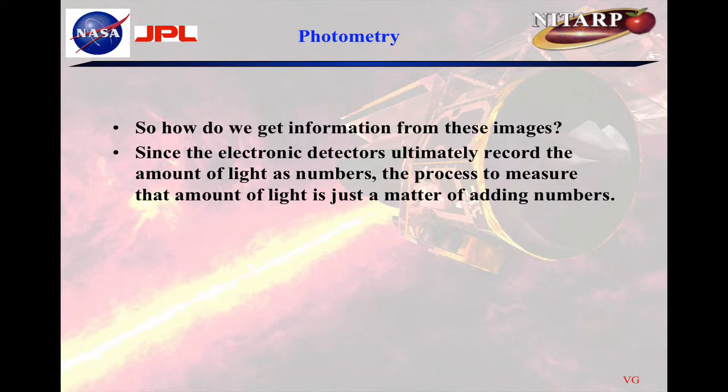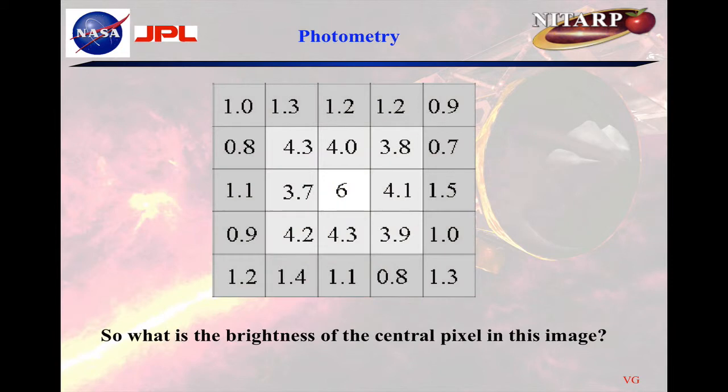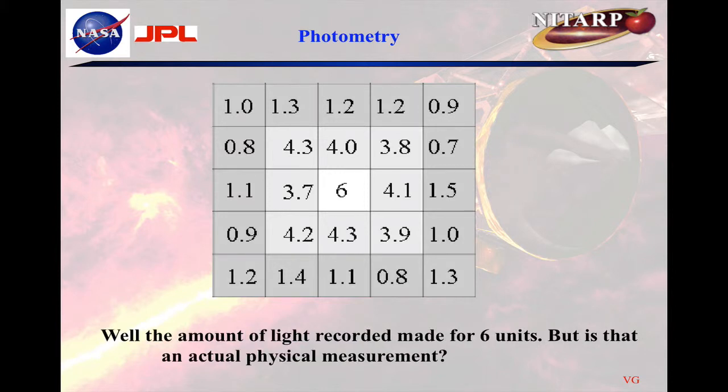So how do we get information from these images? Since electronic detectors ultimately record the amount of light as numbers, the process to measure the amount of light is just a matter of adding numbers. Going back to our original grid of pixels, each of the brightnesses in each pixel is represented by a value. So what's the value of the central pixel? It's six. But is that an actual measurement of something physical — a real representative of what this image was imaging? Not really.